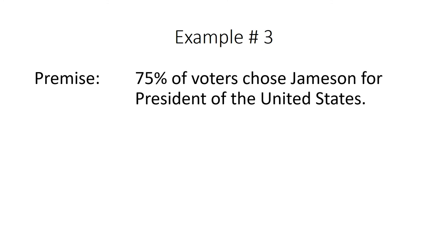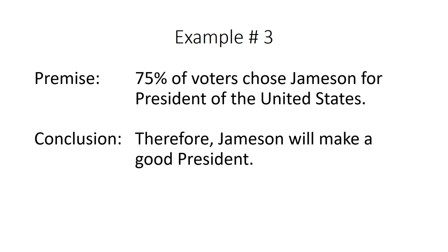Example number three: 75% of voters chose Jameson for President of the United States. Therefore, Jameson will make a good president. Again, just because a large group of people choose somebody to do something doesn't mean that person will be good or honest, because you don't know what the background of the people are. However, you can say that he's popular — and actually, ad populum means people, and we get the word popular from that word. But you can't make the claim that he'll be a good president. You have to look at his character, not just what people think or how many chose him.